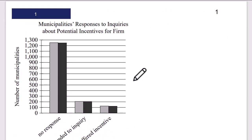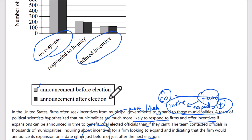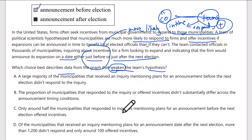Looking at the data: most municipalities don't even respond, and that doesn't differ between whether the announcement is before or after the election. In theory, if the hypothesis were true, the number of non-responses would be much less for before the election, and offered incentives would be much higher. But the light and dark bars are about the same for every area when they should be differing — the fact that they're the same is what weakens the argument. There's no difference between before or after.